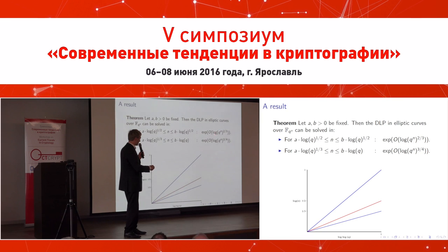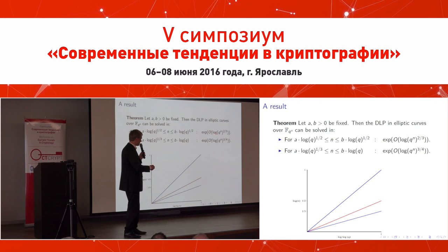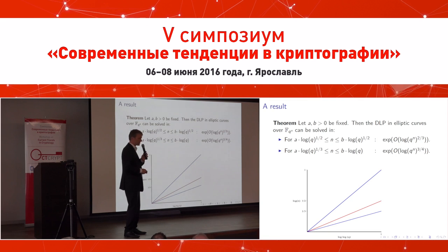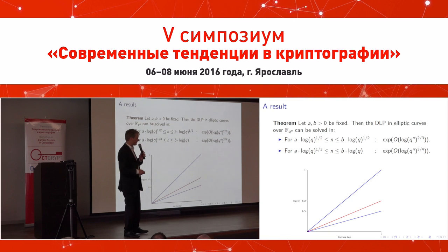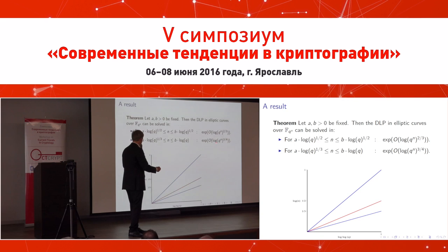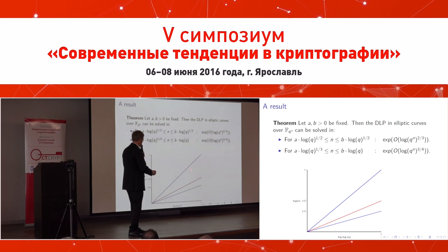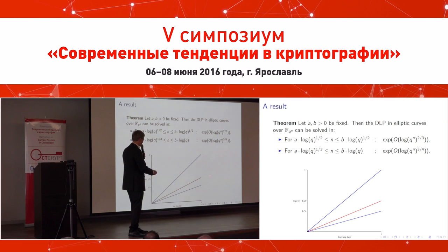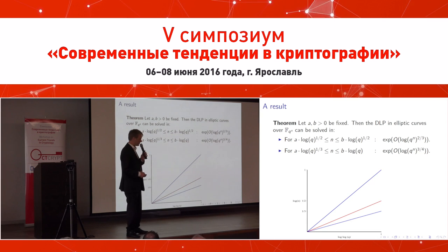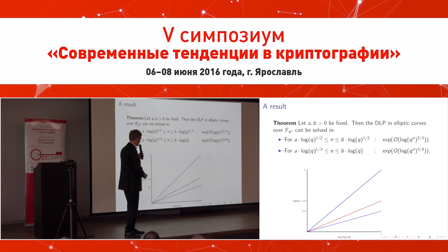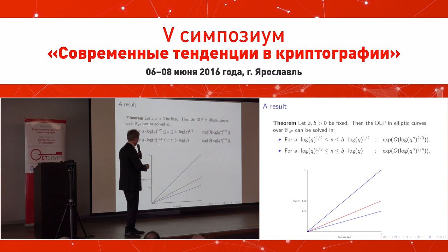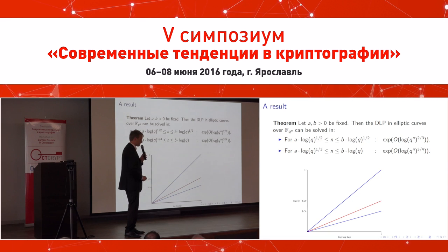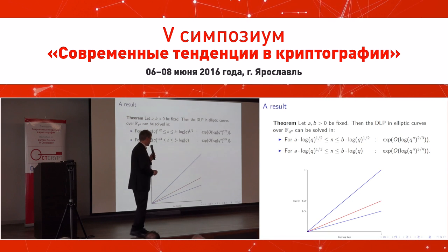Between the two blue lines you have a sector, and I have some other heuristic results. You can have a larger sector going all the way nearly straight up and still be heuristically speaking sub-exponential.